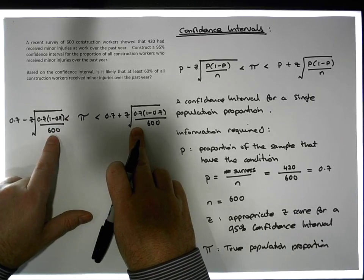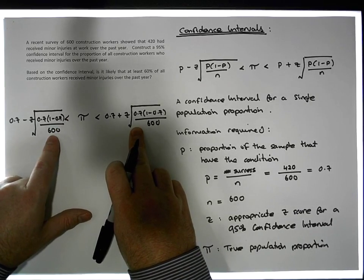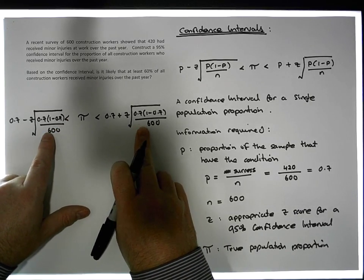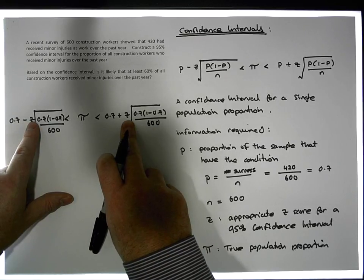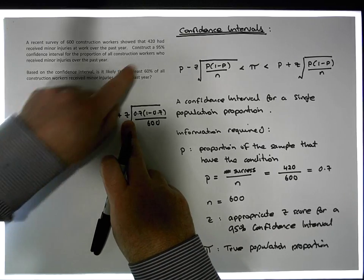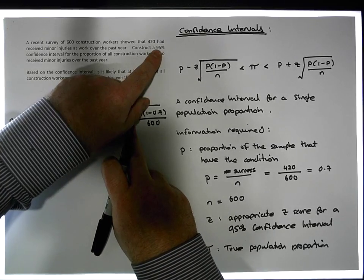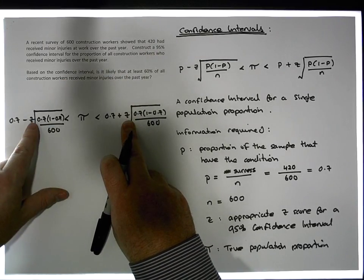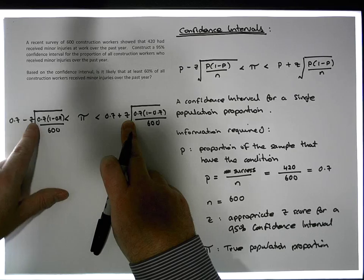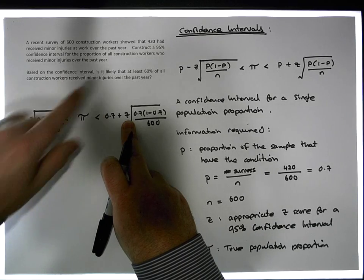The confidence interval's lower and upper bounds change depending on the z score — the z score that comes along with the 95% interval, or the z score that would come along with the 90% or the 98% confidence interval.